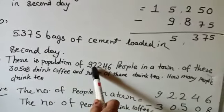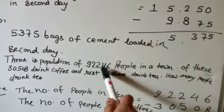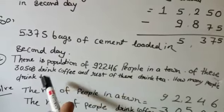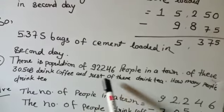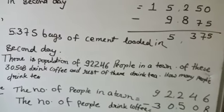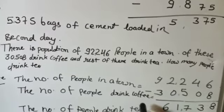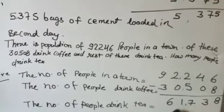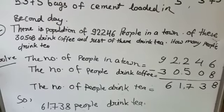Question 2: There is a population of 92,246 people in a town. The number of people who drink coffee is 30,508. To find the number of people who drink tea, we subtract: 92,246 minus 30,508 equals 61,738. So 61,738 people drink tea.